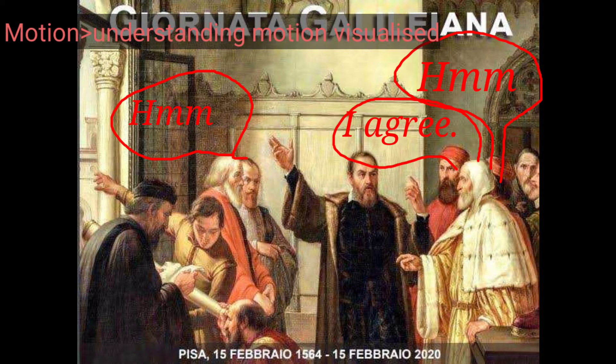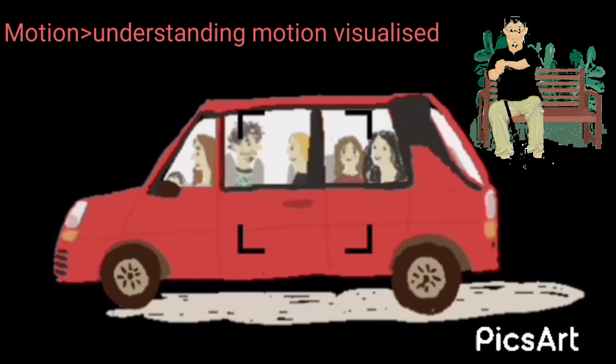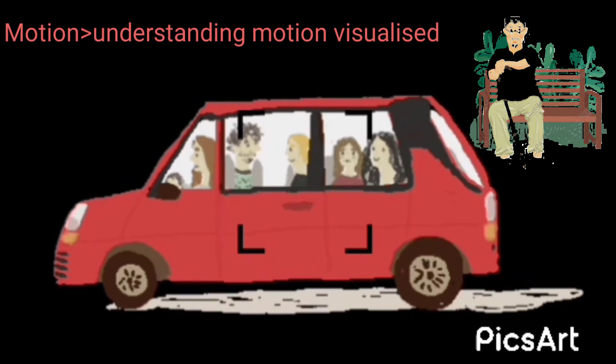One of the first things that Galileo studied was what we are going to call motion — when something is moving. And one of the first things you are going to try and understand is what we mean when we say something is moving. Let's take a very simple definition.